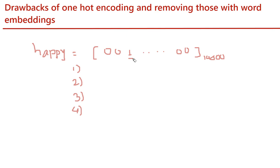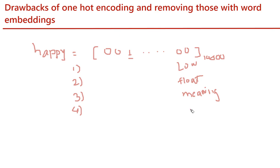For this we have word embedding. With the help of word embedding, we are trying to build a low-dimensional vector which will include floating point numbers instead of zeros and ones, which will have meaning. And also these vectors will be learned from the data on their own — we are not going to generate these vectors by hand-crafting.